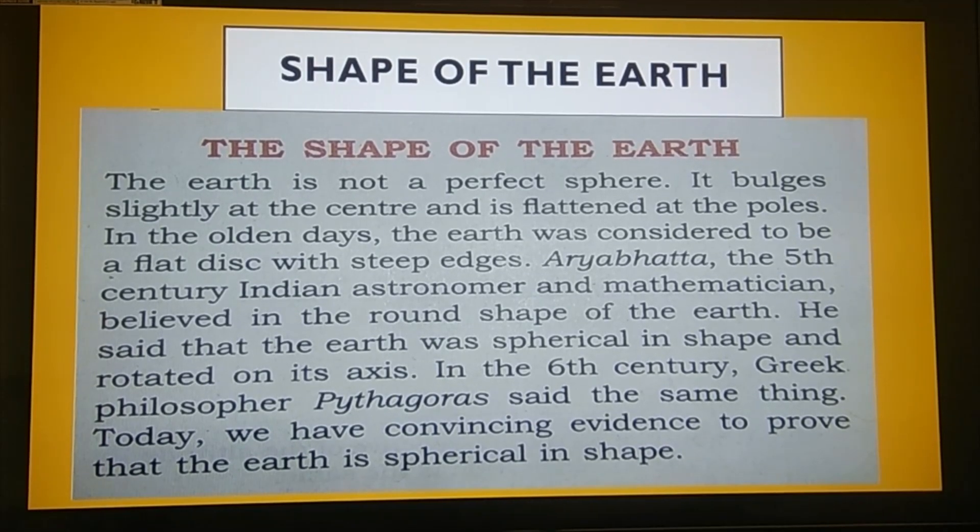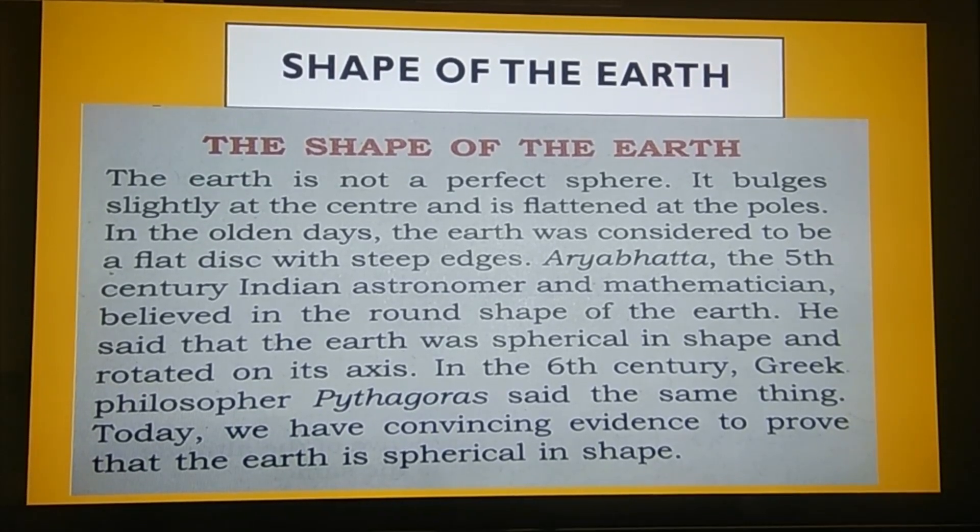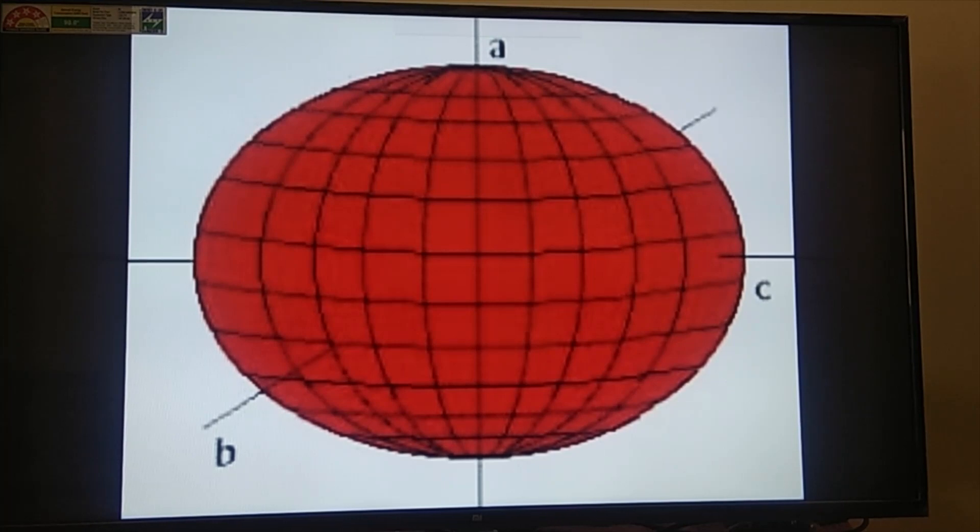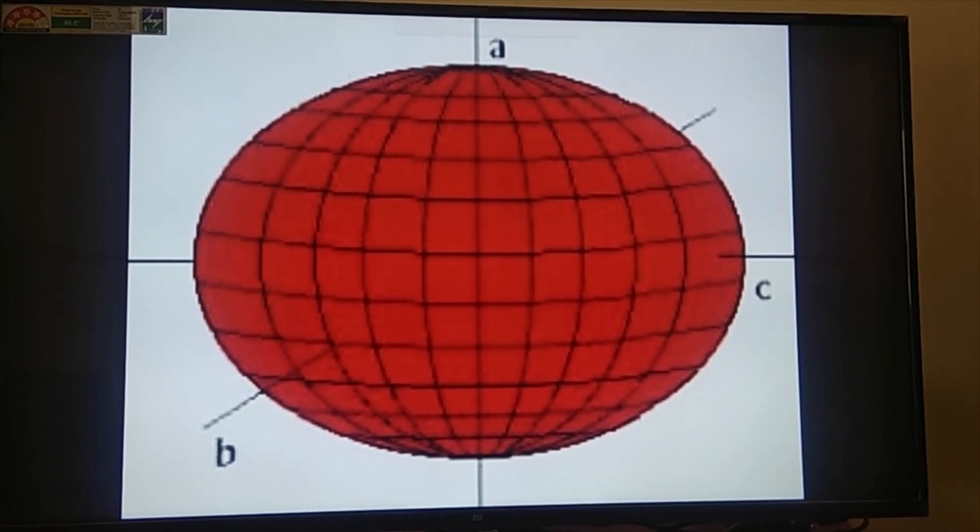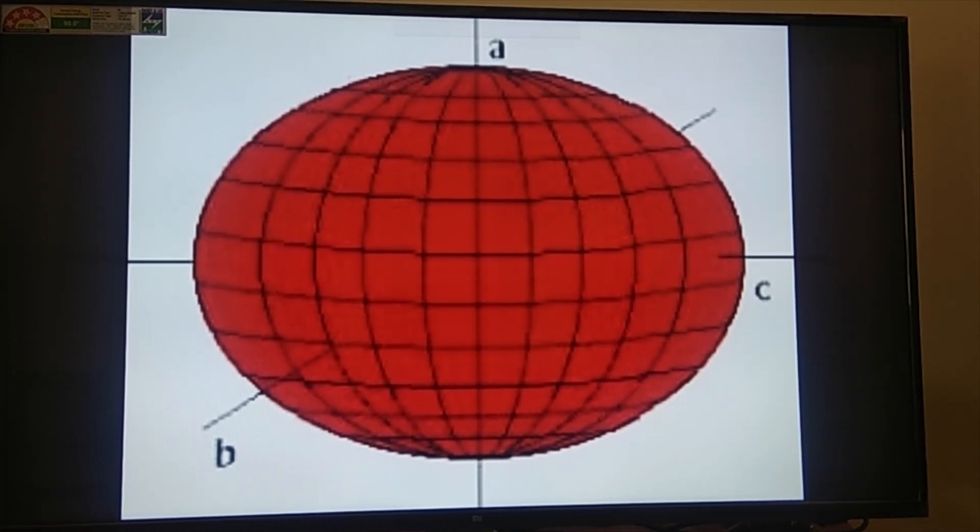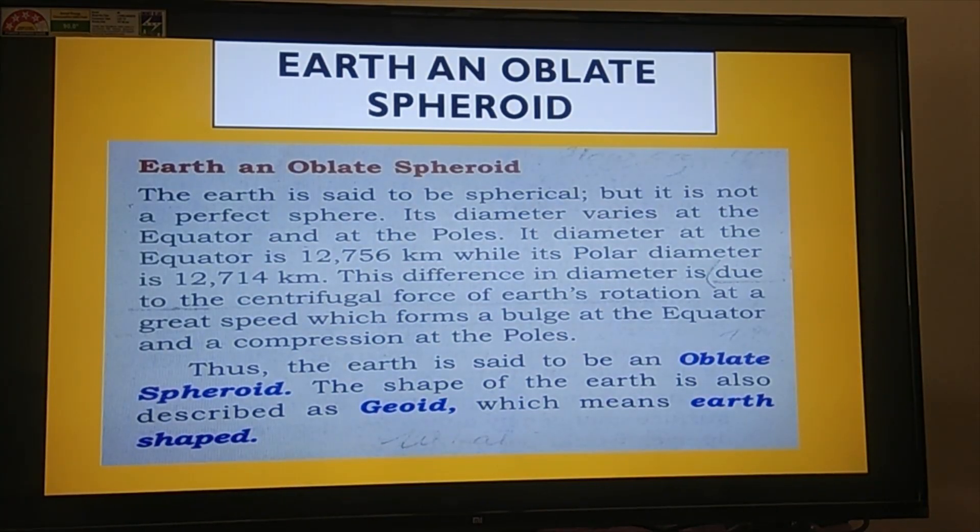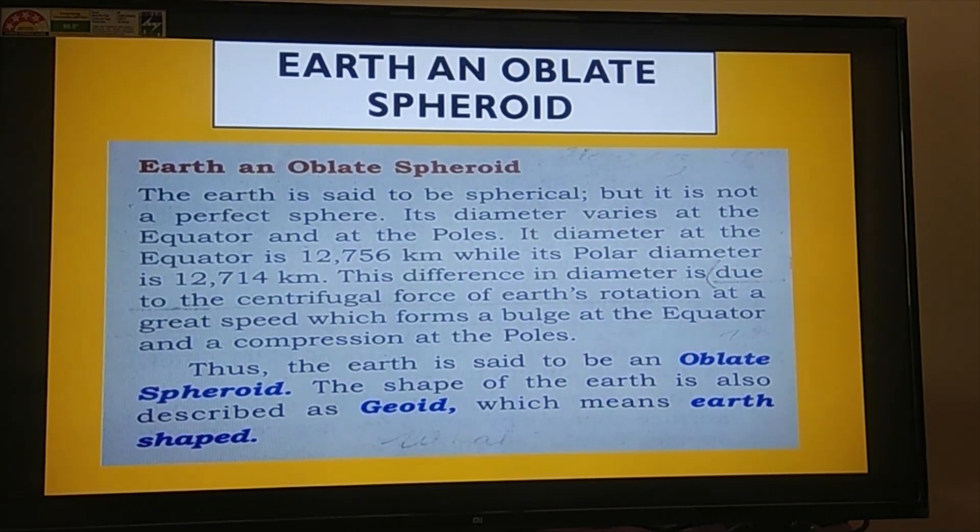So here I would like to show you the correct shape of the Earth. Here on the screen, you are able to see a diagram, and in this diagram you will be able to see the poles of the Earth are flattened and it is broad at the equator. How we come to this conclusion, why it is in such a shape? For that, we will just see the next heading.